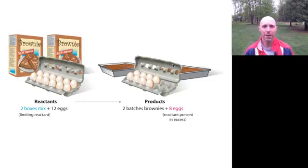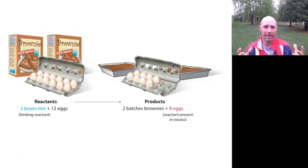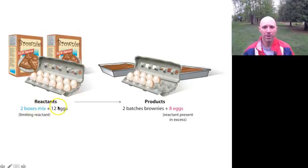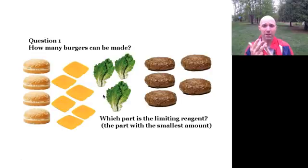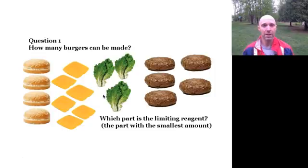With brownie mix and eggs: you've got two boxes, each requiring two eggs to make brownies. You've got an excess of eggs — you only use four total — meaning the boxes are the limiting factor. You could have made six or more total sets of brownies. Another example with hamburgers: you've got buns, cheese, lettuce, and actual burgers. The one present in the smallest amount is the limiting factor — in this case, lettuce — meaning you could only make three complete hamburgers given that set of ingredients.